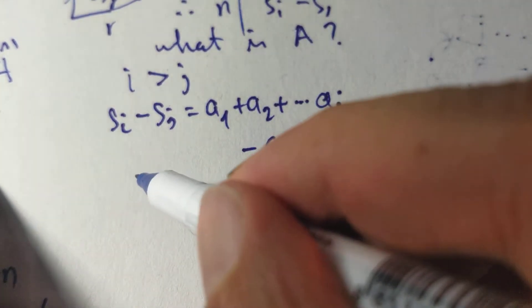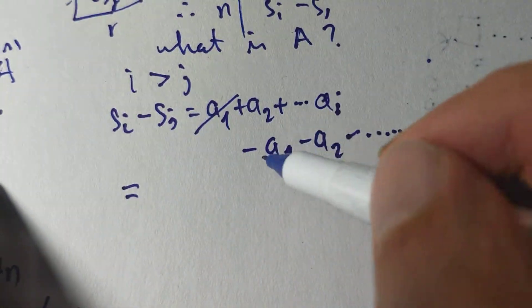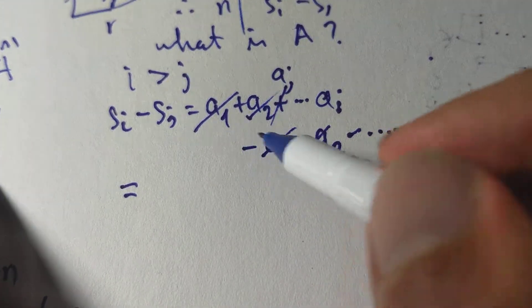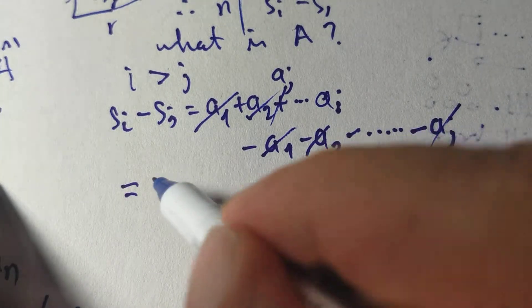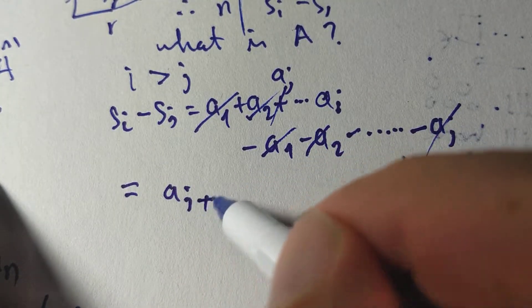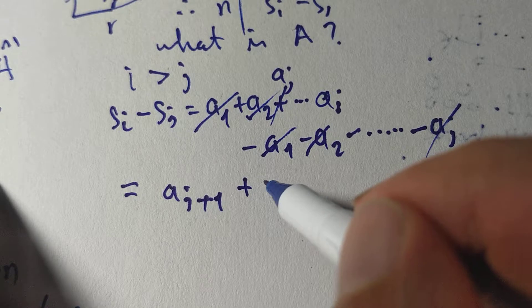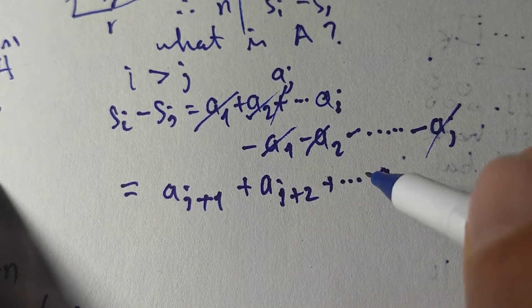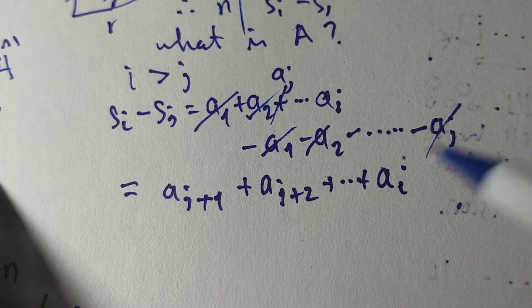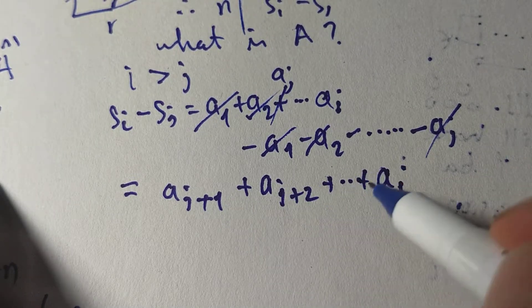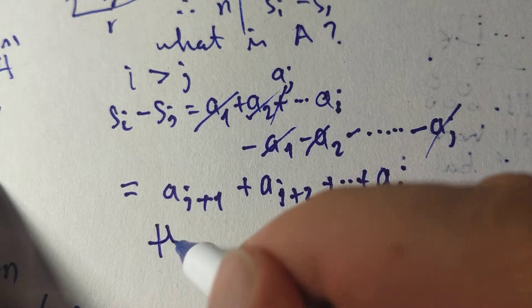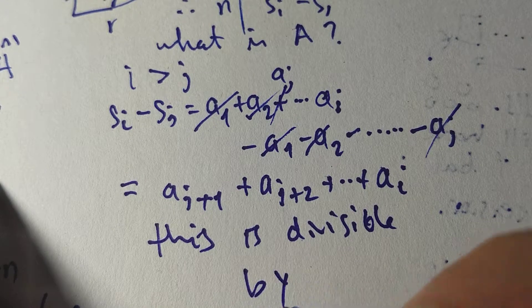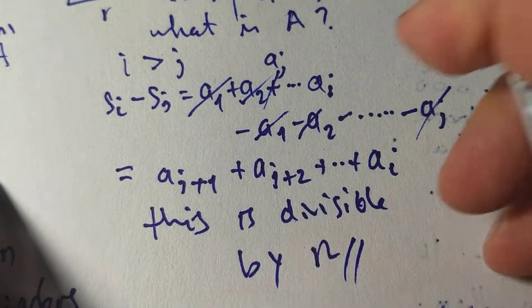So, in other words, I'm cutting out all these elements here, like this, all the way up to AJ. AJ is gone. AJ gone. So I have AJ plus 1 plus AJ plus 2 plus all the way up to AI and I know that this sum is divisible by N.